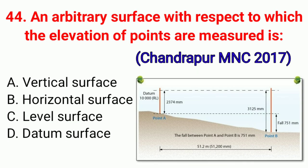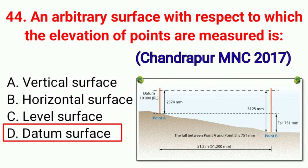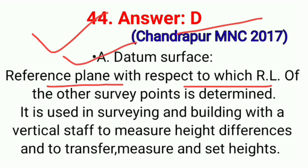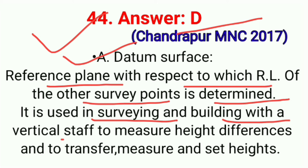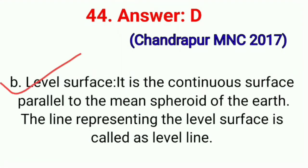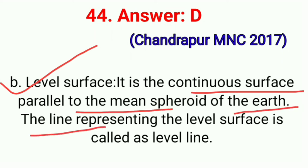Question No. 44. An arbitrary surface with respect to which the elevation of points are measured is — correct option D: Datum surface. A datum surface is a reference plane with respect to which the reduced level of other survey points is determined. It is used in surveying and building with a vertical step to measure height differences and to transfer and set heights. Level surface — a continuous surface parallel to the mean spheroidal surface of the earth. Correct option D.